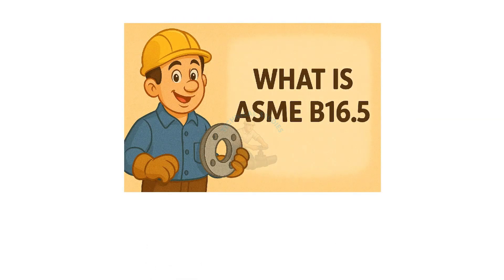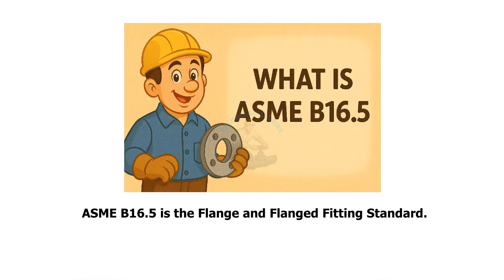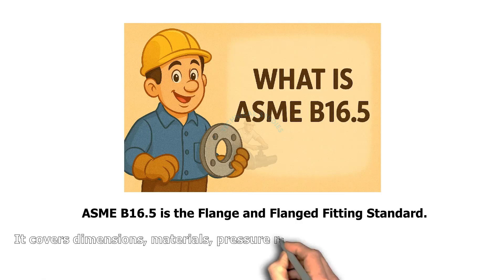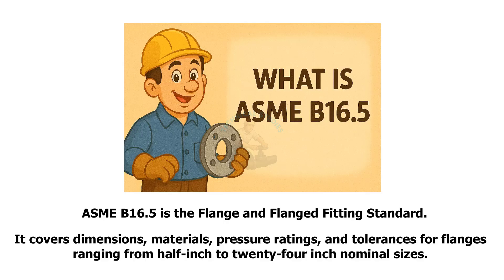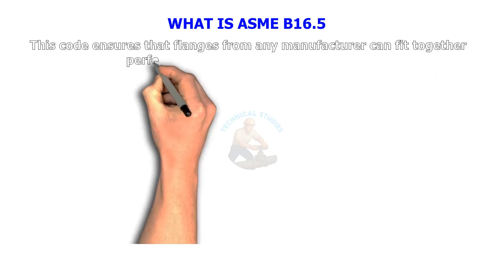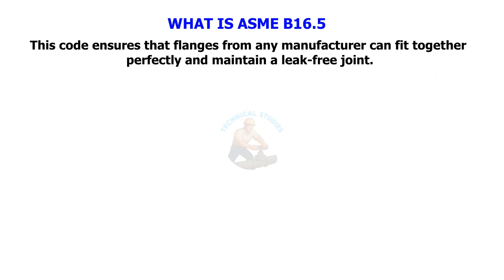What is ASME B16.5? ASME B16.5 is the flange and flanged fitting standard. It covers dimensions, materials, pressure ratings, and tolerances for flanges ranging from half-inch to 24-inch nominal sizes. This code ensures that flanges from any manufacturer can fit together perfectly and maintain a leak-free joint.